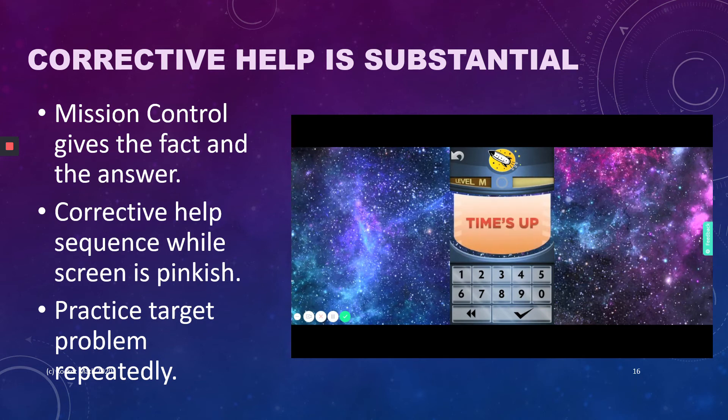You've got to be faster. Wait. Listen for the answer. Four times four equals sixteen. Go again.